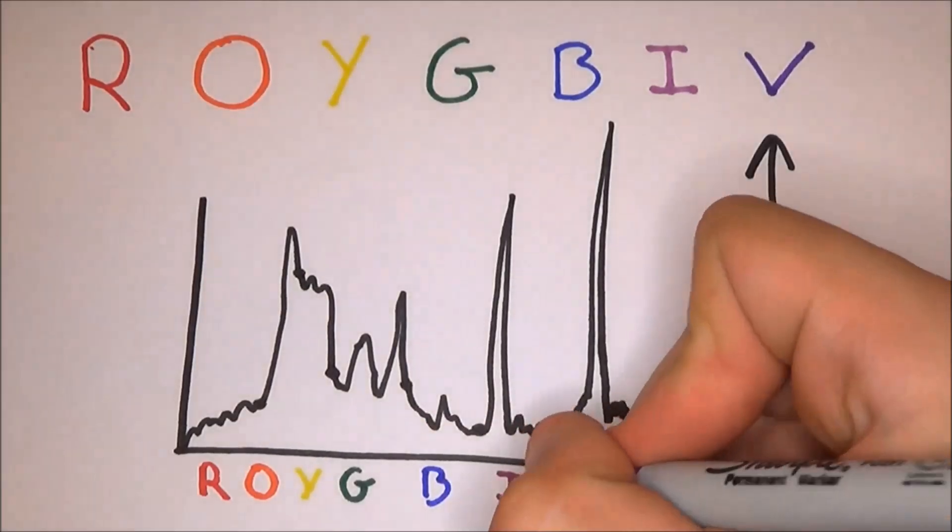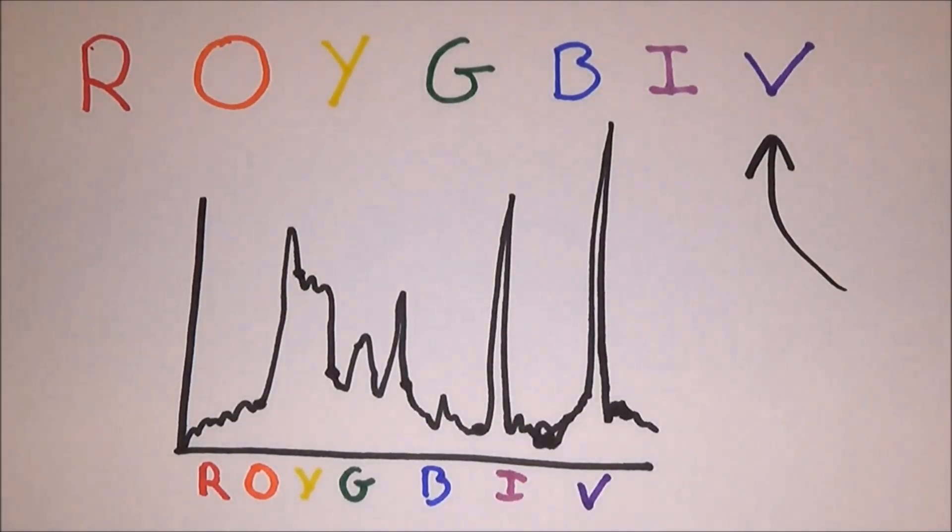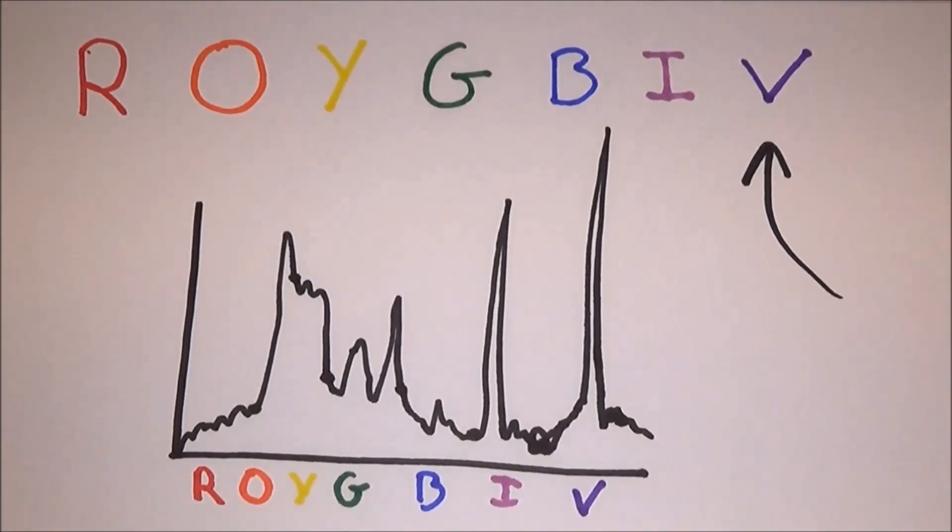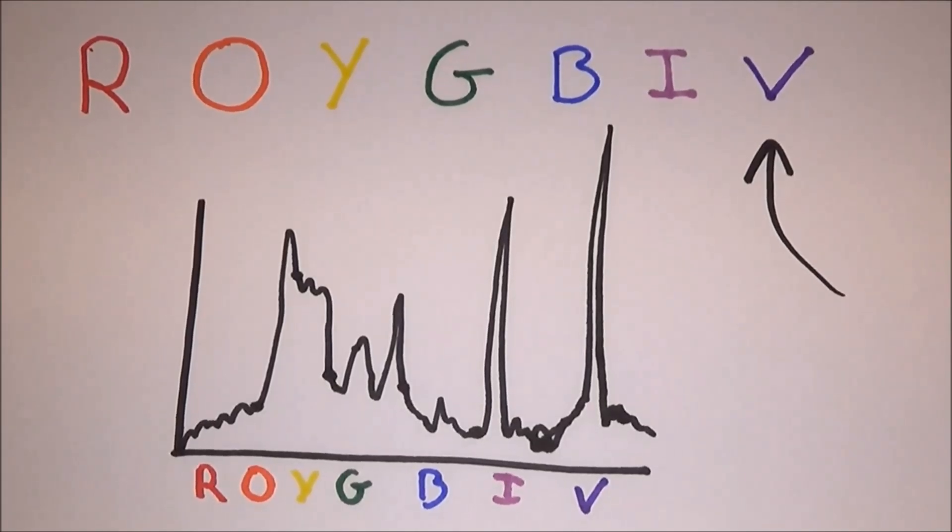In addition to that, ultraviolet gets absorbed high up in the atmosphere by ozone, and this leaks into the violet section slightly, so some violet gets absorbed.